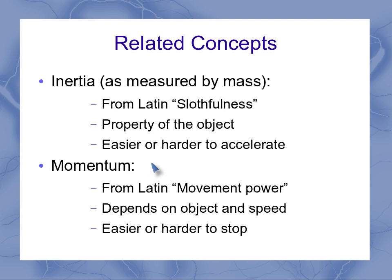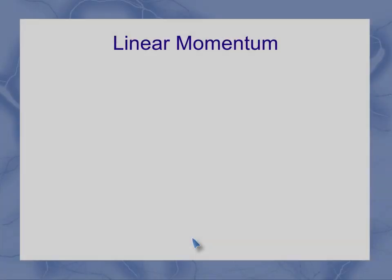Now when I get to momentum, that actually comes from Latin as well. And it's kind of roughly translated the movement power. And it depends on the object, because the mass is in there. But it also depends on the speed. And we can think about this one in terms of easier or harder to stop. An object that's got a lot of momentum going is going to be harder to stop. And that's often the way we use it in our language today. If a football team is moving down the field and they keep progressing, they're said to have momentum.